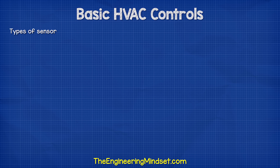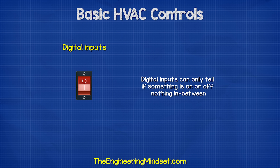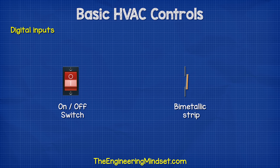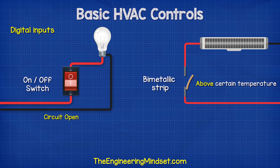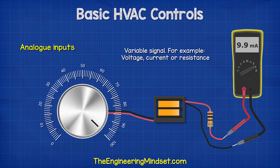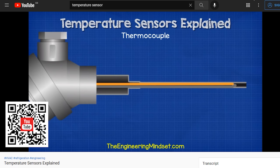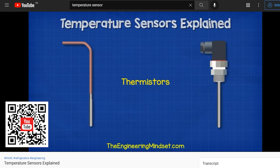We have two main types of sensors: digital and analog. Digital inputs can only tell if something is on or off — nothing in between. For example, an on-off switch or a bimetallic strip. The circuit is either open or closed, so we can only tell if the temperature is above or below a certain value. Analog inputs vary their signal — they might vary in resistance, voltage, or current between a minimum and maximum value. So we can use these to determine the exact temperature or pressure. We have covered how temperature sensors work previously, and I'll leave a link in the video description below.